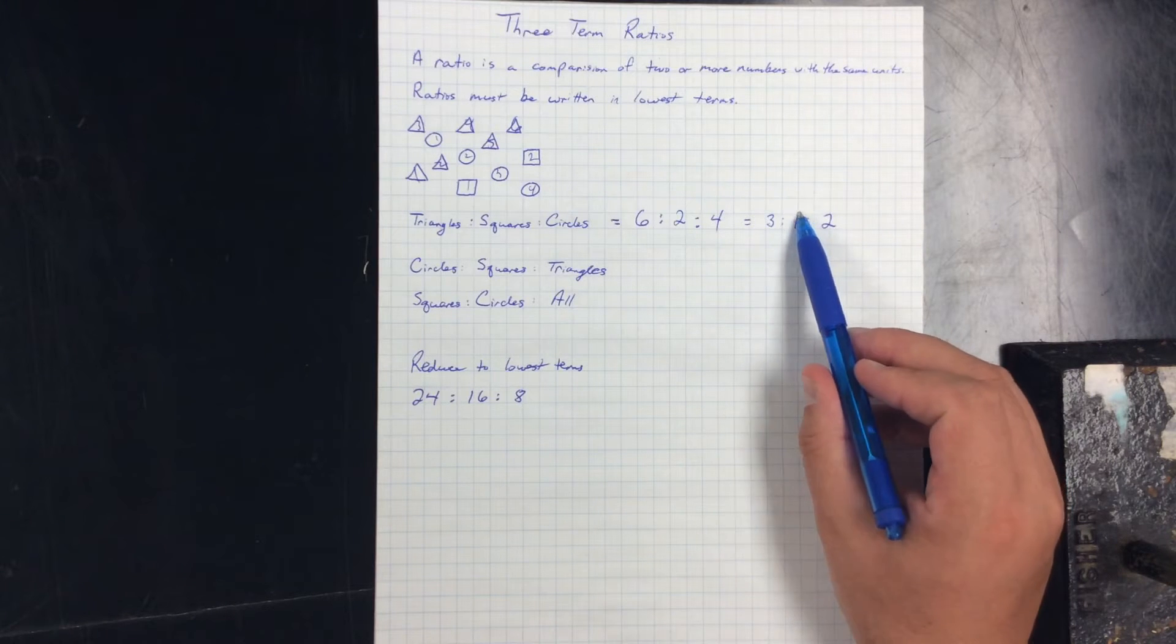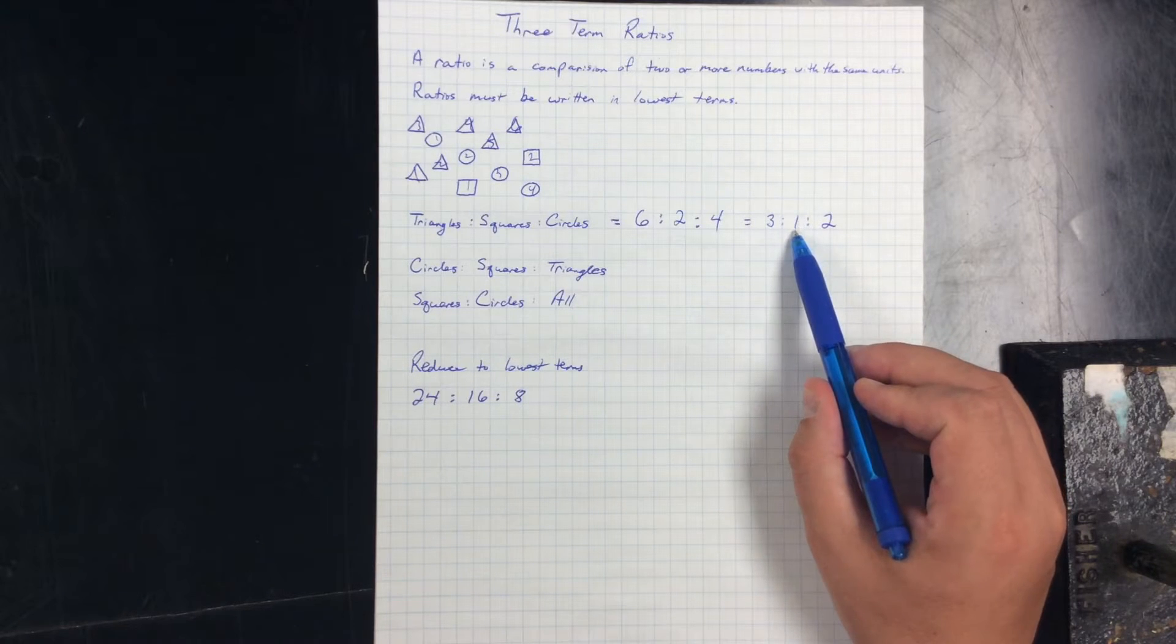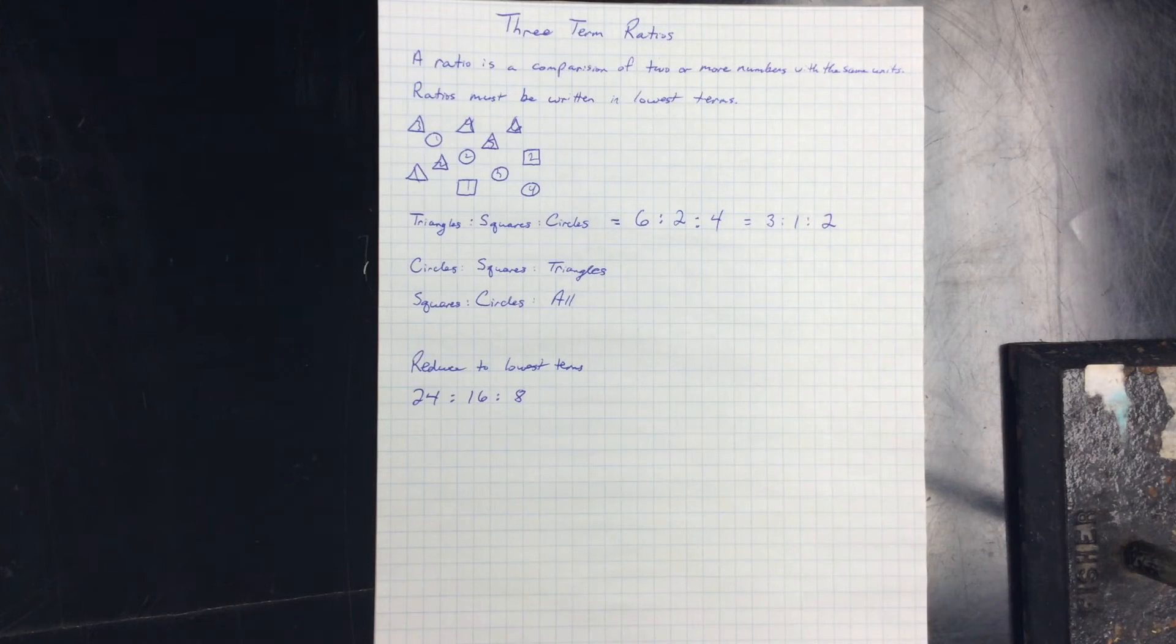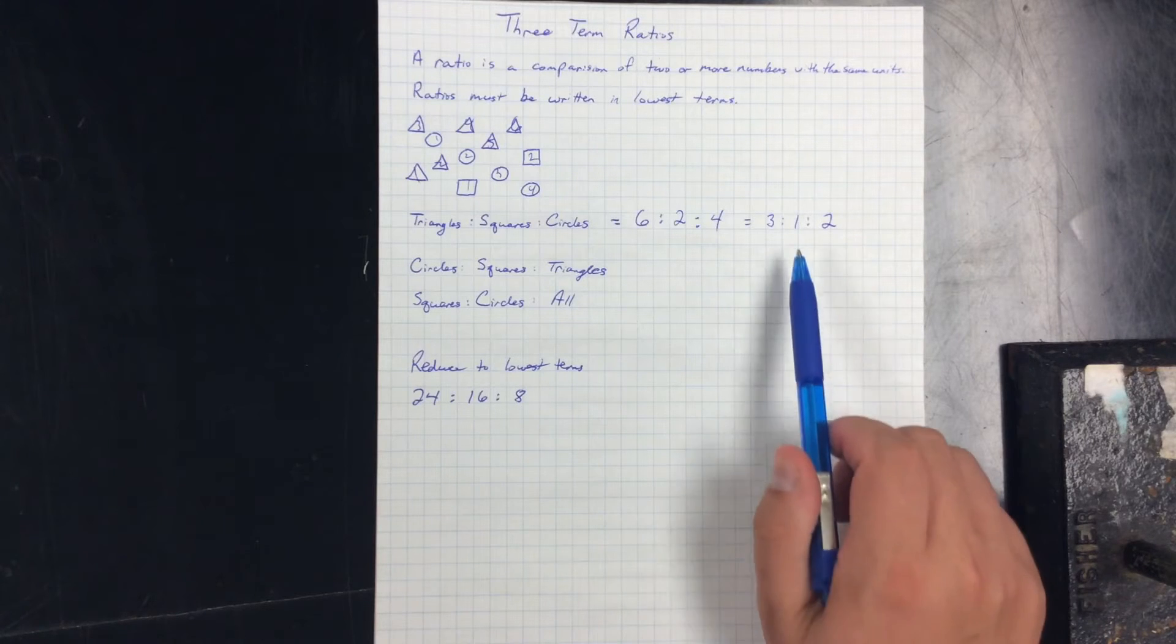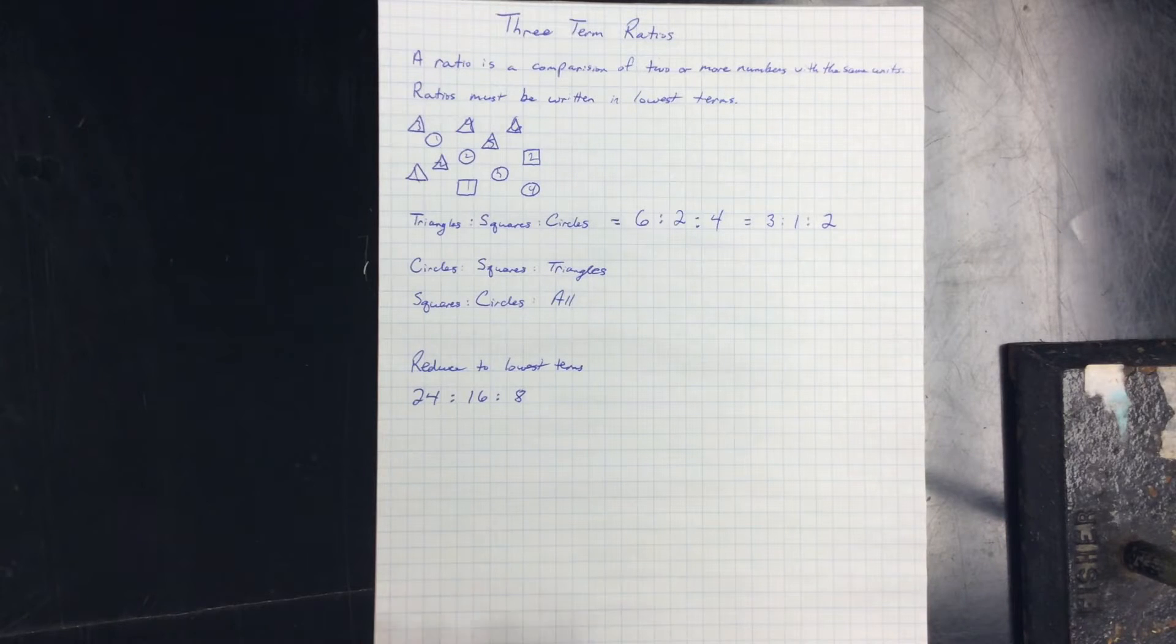So in lowest terms I get three to one to two. I know that's in lowest terms because I have a one in there. That's usually a good sign, and they're also in sequence one, two, three. So there's no other factors besides one that divide evenly into one, two, and three.